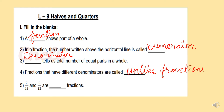Question 5. 2 by 12 and 5 by 12 are dash fractions. In the first fraction, 12 is the denominator. In the second fraction also, 12 is the denominator. So the denominators are the same, which means these fractions are called like fractions.